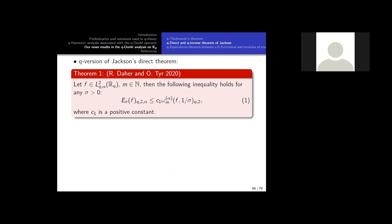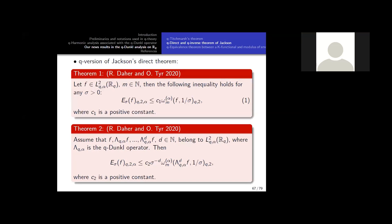It's the direct theorem of Jackson. How do we prove the Q-analog of Jackson's theorem? Here is the result. And so we have a Q-analog also. It's another formula, a Q-version of Jackson's theorem.